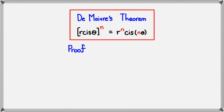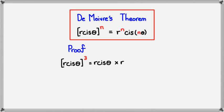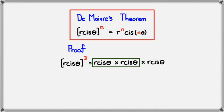Here's the proof of how De Moivre's Theorem actually works out. If we have r cis θ to the power of 3, then we know that this is equal to r cis θ multiplied by r cis θ multiplied by r cis θ. Now what I'm going to do is work with the first two r cis θ terms — that's in the green box right here.